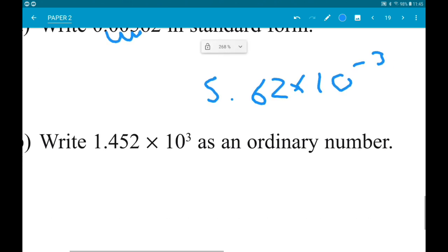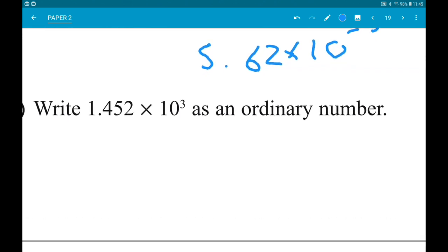Part B: Write 1.452 times 10 to the 3 as an ordinary number. That moves the decimal three places to the right, so that's 1,452.